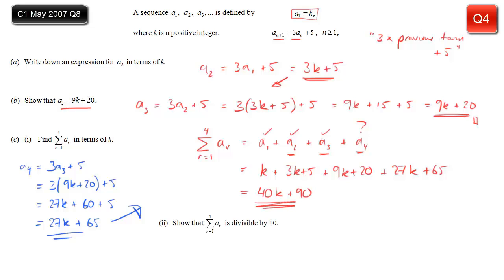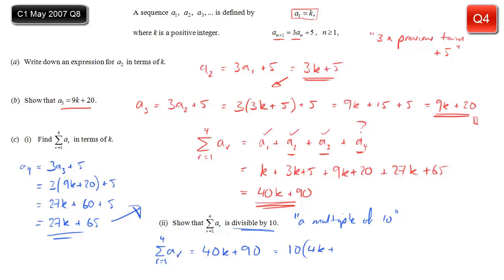That's the summation — the answer to part c. Now it asks us to show that 40k plus 90 is divisible by 10 — that is, a multiple of 10. We just need to show it's 10 times something. Writing 40k plus 90, we can take out 10 as a factor from both terms: 10 times 4k plus 9. Since k is an integer, 4k plus 9 is also a whole number. So we've shown the expression is 10 times an integer, and therefore it's a multiple of 10 and divisible by 10.